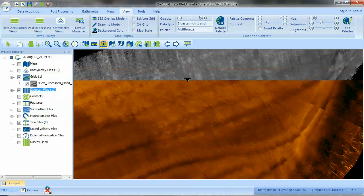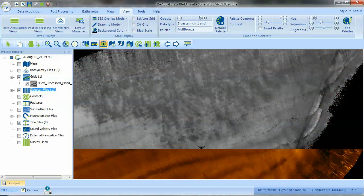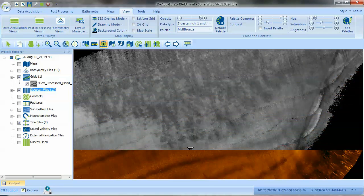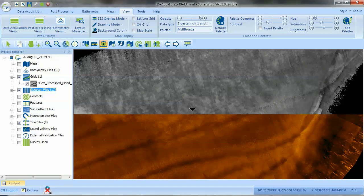If we now use the Sonarwhiz swipe tool to peel back the side-scan and look at the bathymetry backscatter in the same location, we can see clearly defined pockets of lighter and darker sediment in much sharper detail.